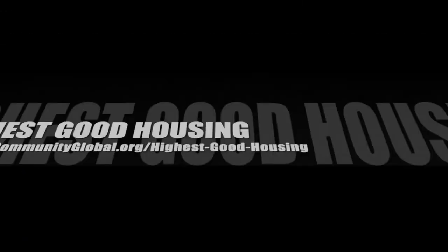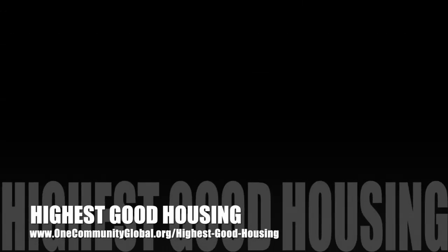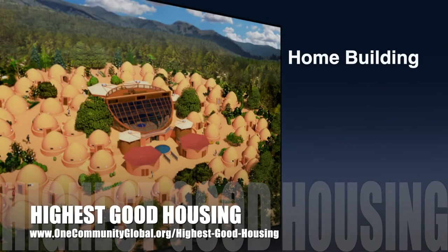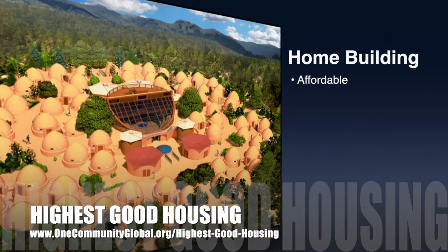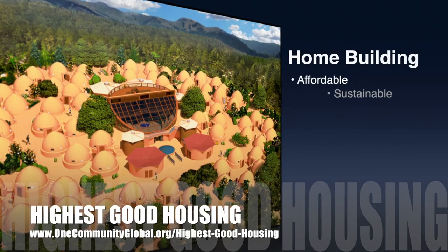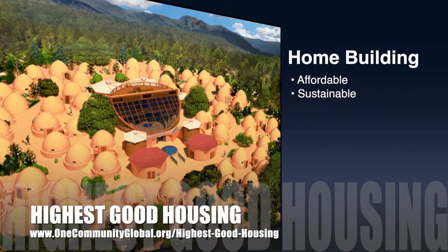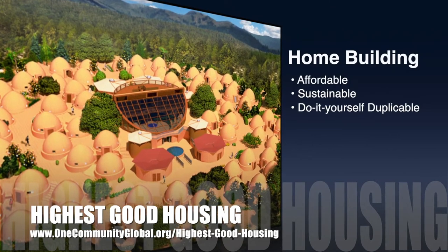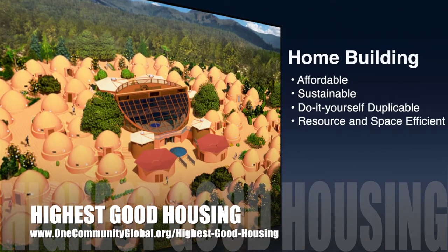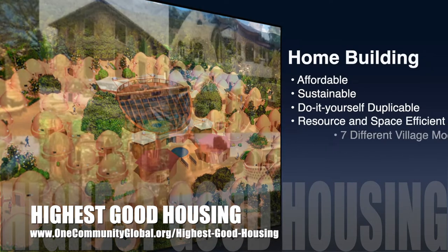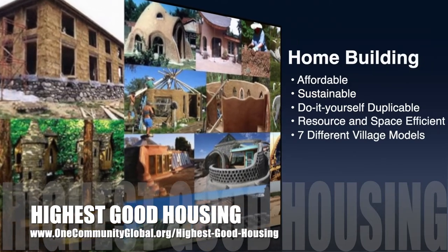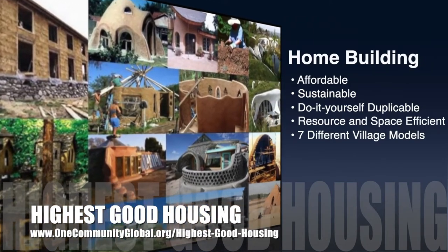The One Community approach to highest good housing is eco-artistic home building that is affordable, sustainable, do-it-yourself duplicable, resource and space efficient, and consists of seven different sustainably constructed village models.